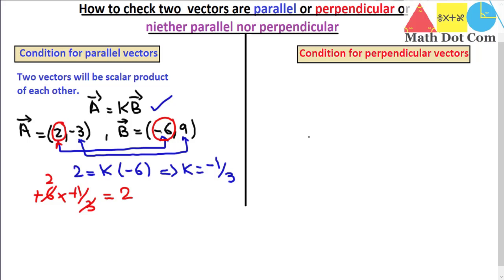The x-component of b is indeed a -1/3 multiple of the x-component of a. Similarly, checking the y-component: 9 multiplied by -1/3 gives -3. Yes, it equals -3. Since both x and y components of b are -1/3 multiples of the corresponding components of a, we can say vectors a and b are parallel to each other.